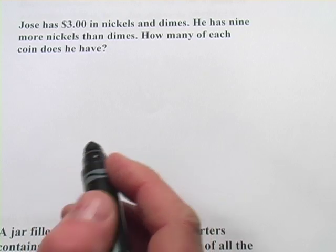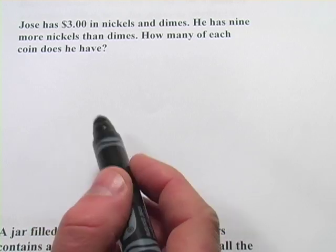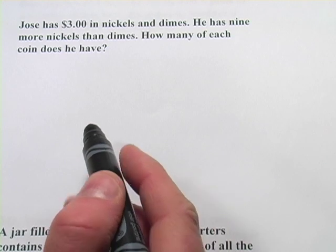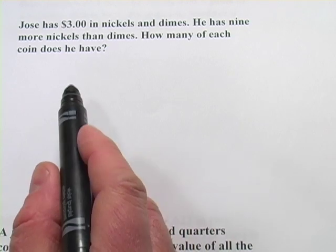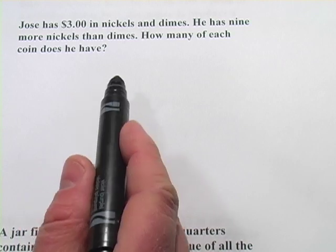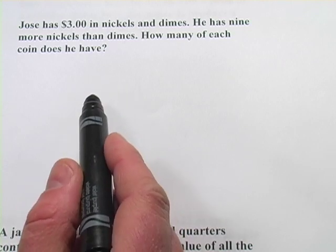Here we have some word problems that will be solved with systems of equations that have to do with coins and counting money. In this first one, it says Jose has three dollars in nickels and dimes. He has nine more nickels than dimes. How many of each coin does he have?